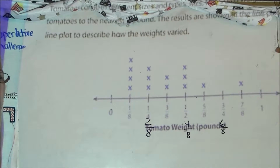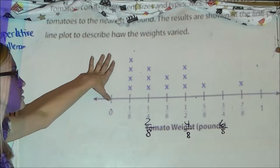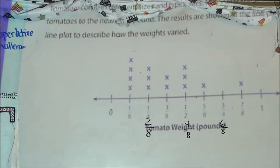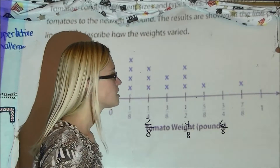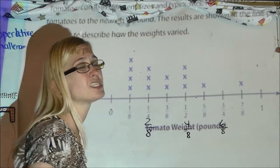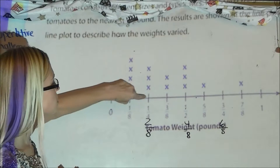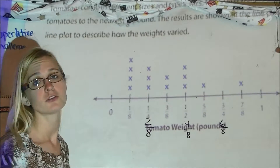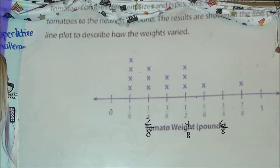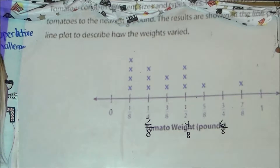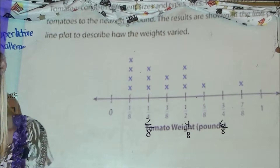I'm not going to move the screen — you'll need to follow along on your paper. The first question says the greatest number of tomatoes weigh. Notice the key word: greatest number of tomatoes weigh, not the greatest weight, which would have been 7/8. Finding the greatest number is talking about frequency. Looking at the line plot, the largest number is 4 tomatoes that weigh 1/8. So the greatest number of tomatoes weigh 1/8.